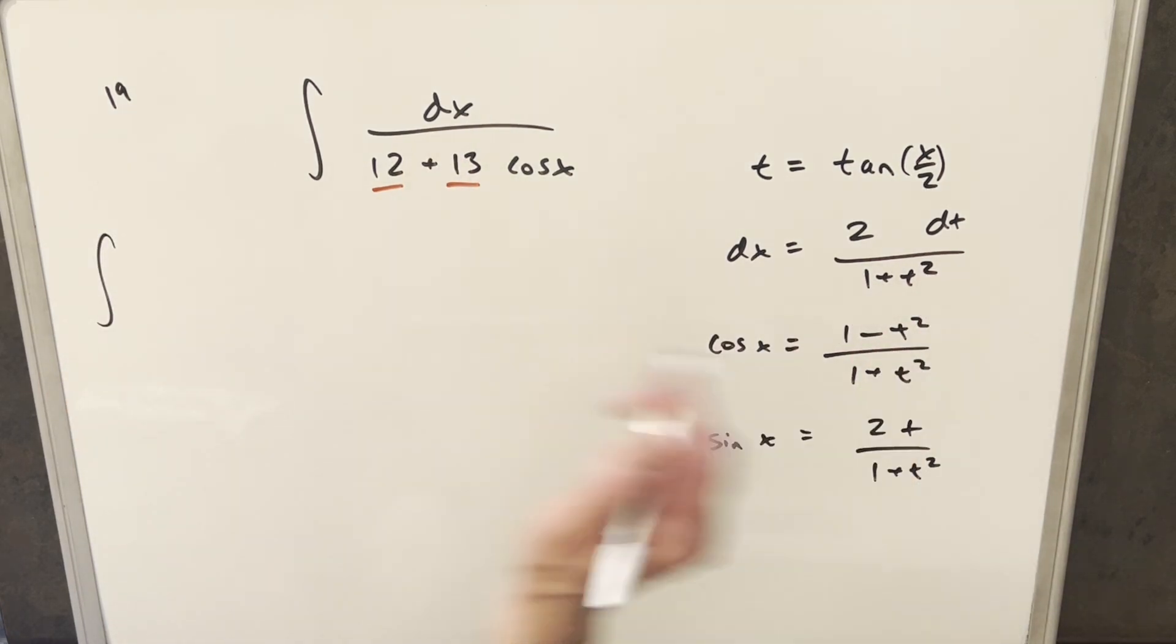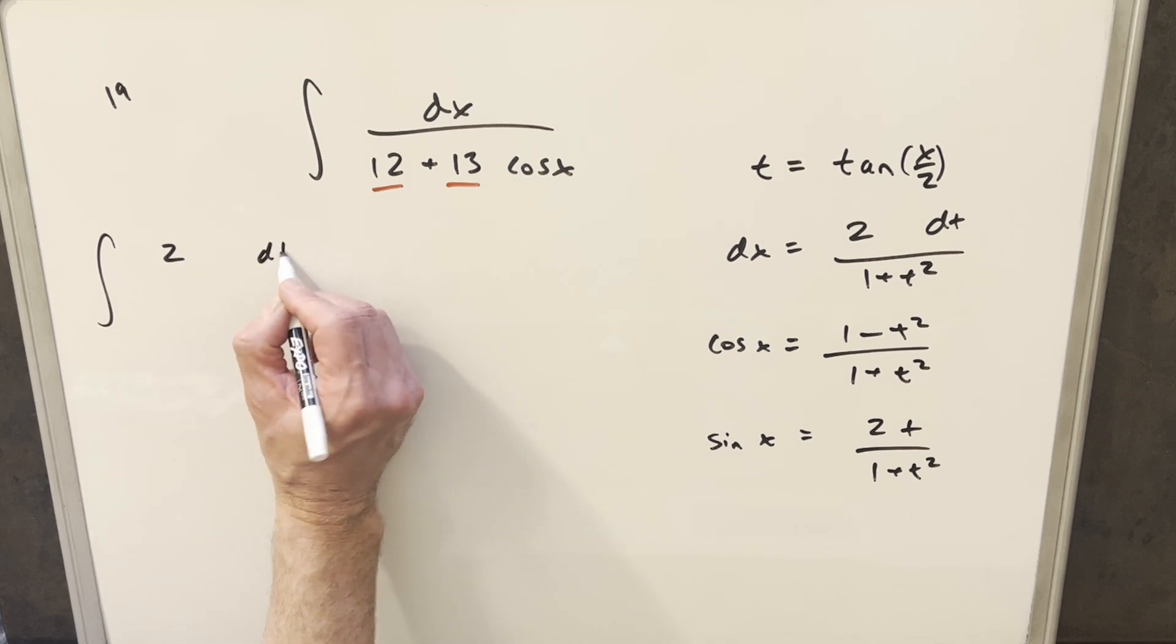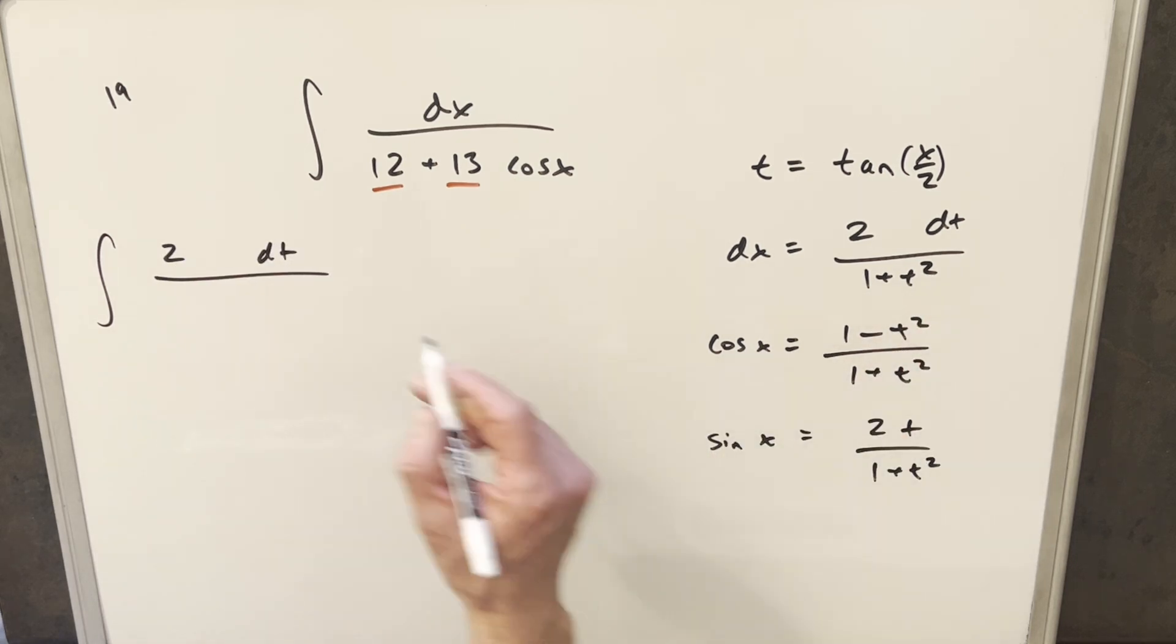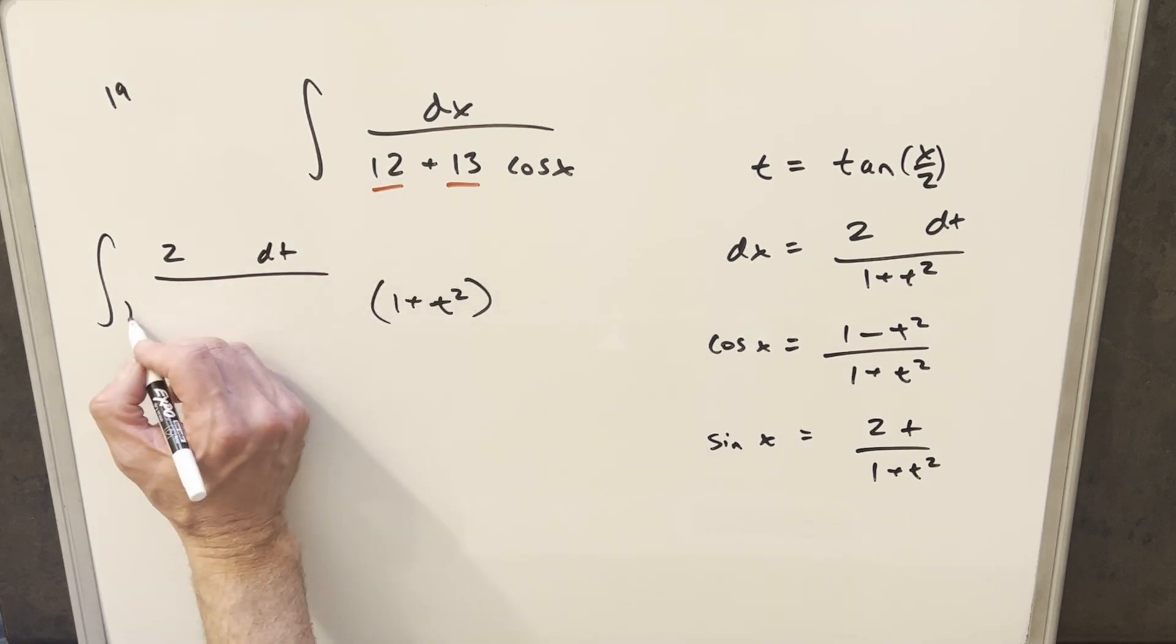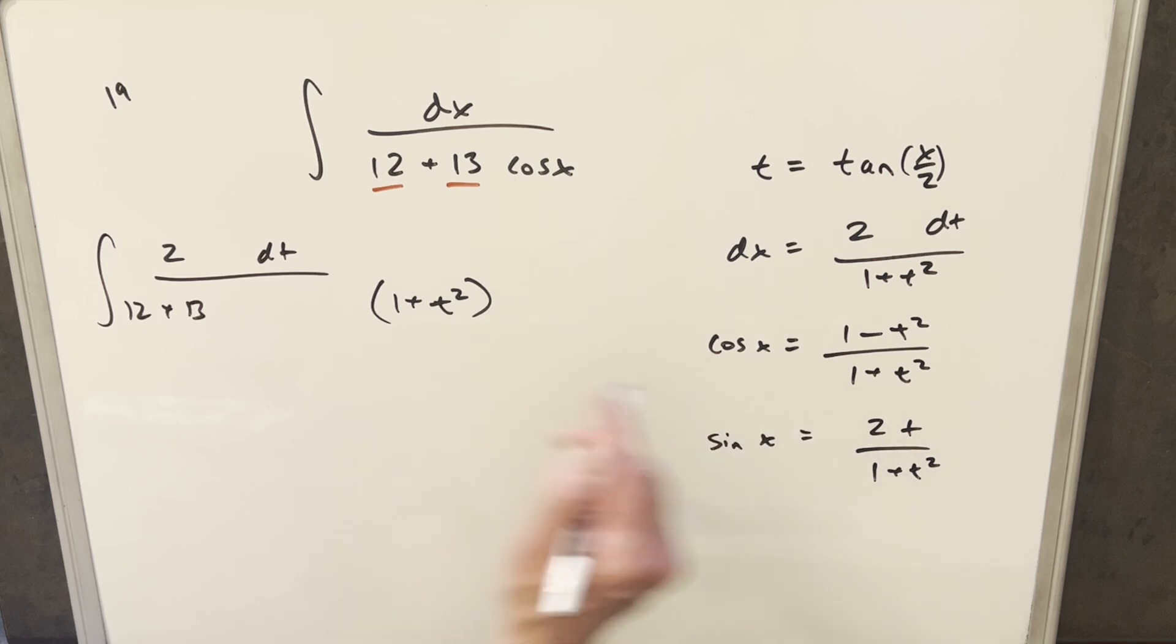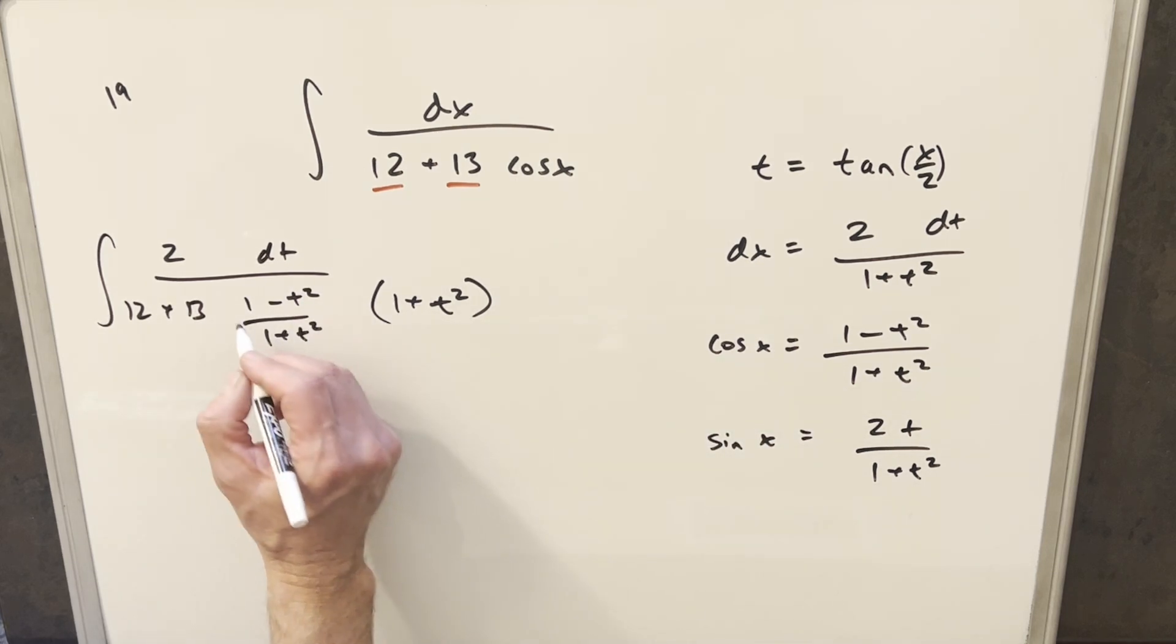So first for dx, we'll have this value here. So we'll have 2 dt in the numerator. For the 1 plus t squared, I'm going to bring it all the way out here, because we're going to need to multiply it into the denominator. So we'll write it like this. We'll have our 12 plus 13. And our value for cosine x is 1 minus t squared over 1 plus t squared.